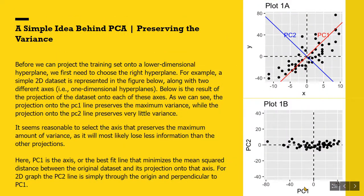The idea behind PCA is preserving the variance. Before we can project the training set onto a lower dimensional hyperplane, we first need to choose the right hyperplane. For example, a simple 2D dataset is represented in the figure below, along with two different axes, or the one-dimensional hyperplanes.